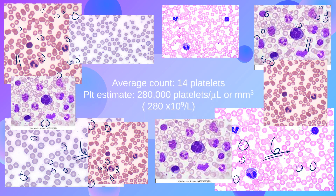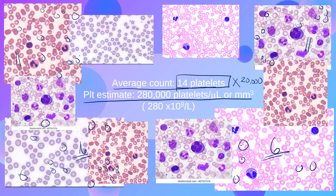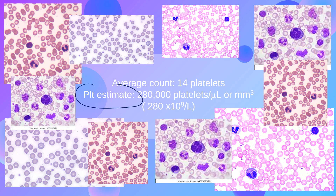Dividing the total by 10 gives the average count. If the average count is 14 platelets, we multiply by 20,000 to get a platelet estimate of 280,000 platelets per microliter or cubic millimeter, or 280 × 10⁹ per liter. This estimate is then compared with the platelet count, and if they are approximately the same, the result can be released.